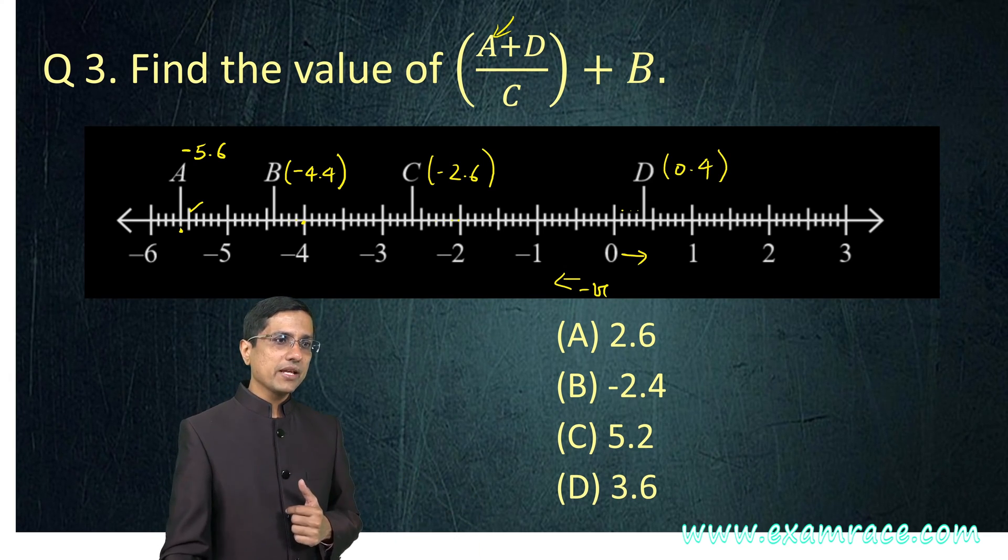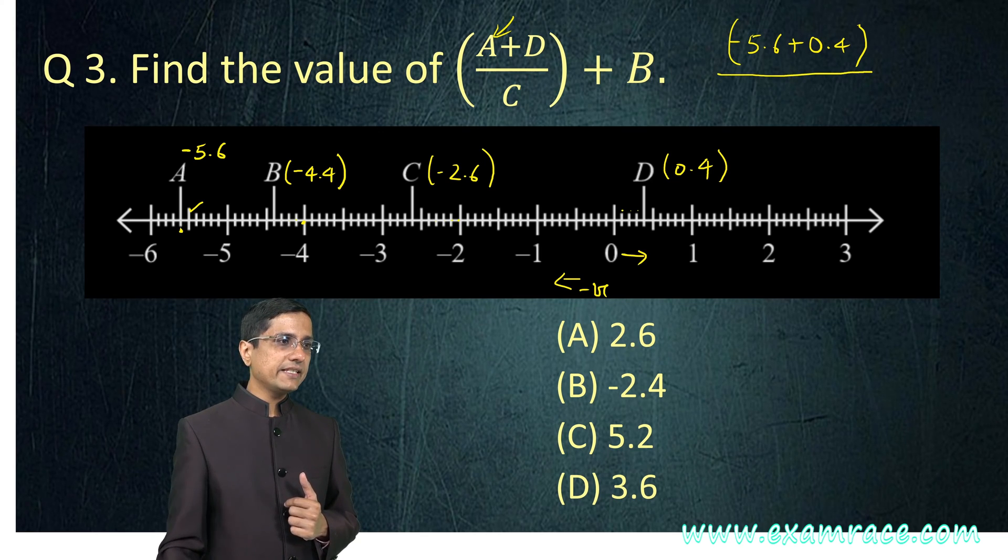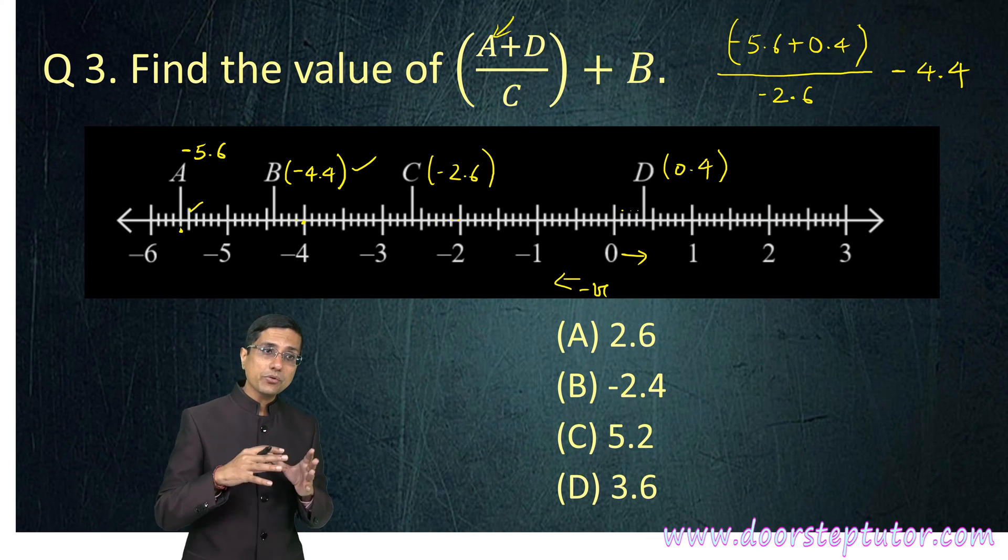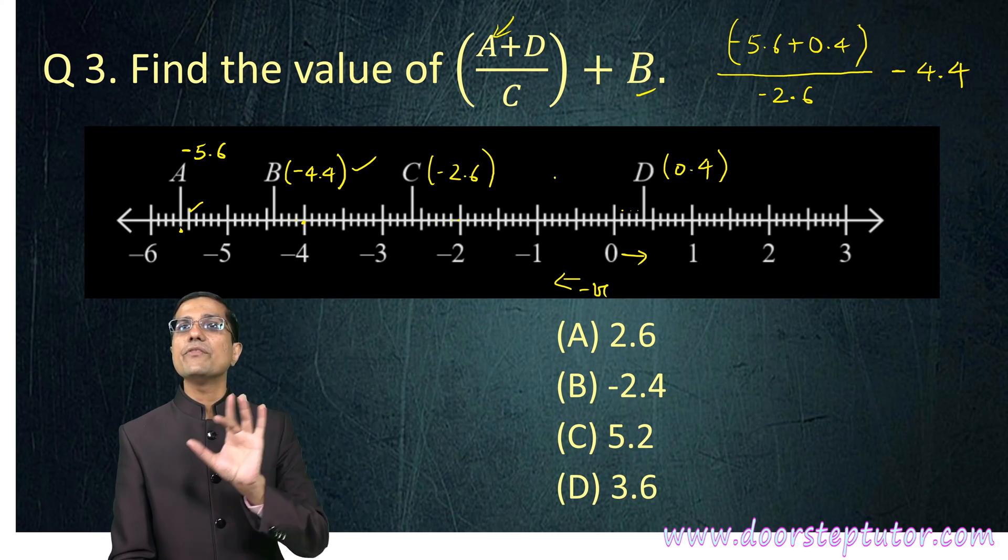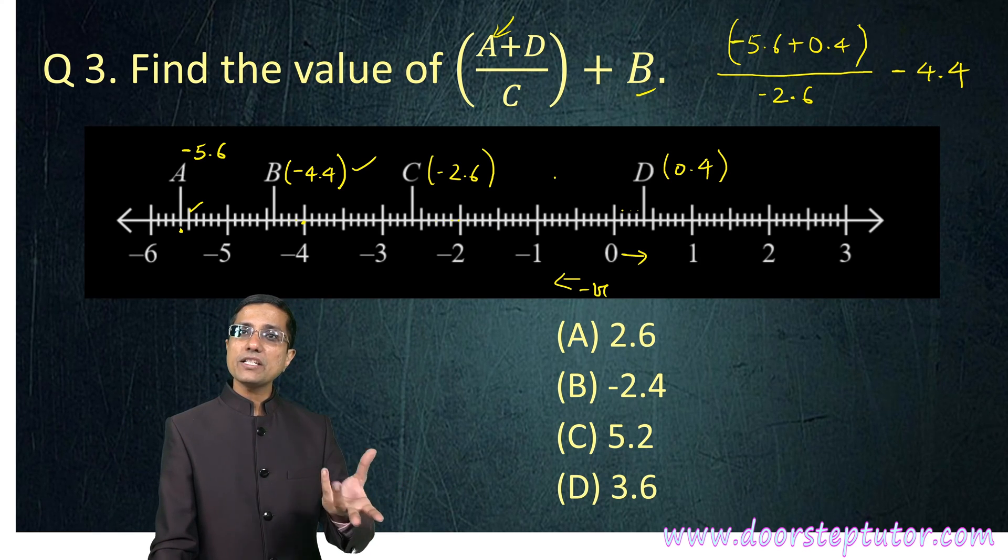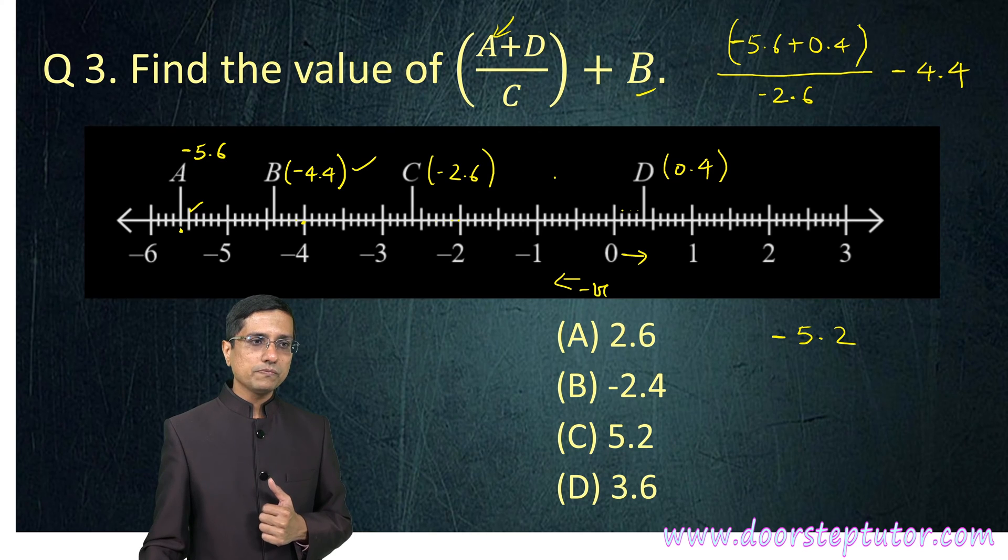Now, I substitute in this formula and what do I get? I get minus 5.6 plus 0.4 divided by C which is minus 2.6, and then I need to add B which is minus 4.4. We need to translate from this figure to this math here. First of all, and second, now we need to know how to do the arithmetic using negative numbers.